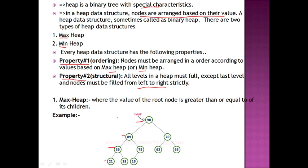Max heap allows parent values greater than or equal to children. Min heap means the root value is lesser than its children. So max heap: root value is greater than or equal to its children. Min heap: parent value is lesser than its children — these are opposite cases.